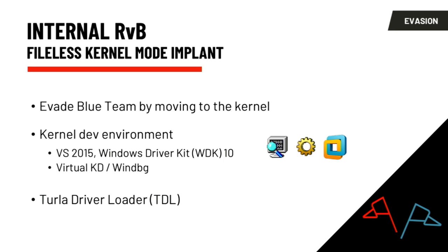One key component we wanted to use in our kernel mode implant was Turla Driver Loader, written by hfirefox on GitHub. It's freely available — an open source implementation of the Turla exploit for getting kernel code execution. In a nutshell, it drops a VirtualBox driver, installs it on the system, exploits it to execute shellcode in kernel mode, and then the shellcode memory-module-style maps a driver into kernel mode without it touching disk. This helps us achieve two objectives: living in memory as much as possible and evading Driver Signature Enforcement checks.